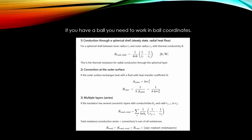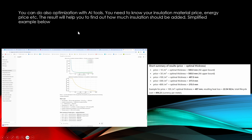If you need to calculate the heat loss from a spherical tank, you need to move to ball coordinates. Here are some examples and guidelines on how to handle this case in ball coordinates. You can also start optimization using AI tools — if you know the material price of your insulation and you have the energy price, you can start finding the optimum thickness for your insulation. Here are some simple examples of that.